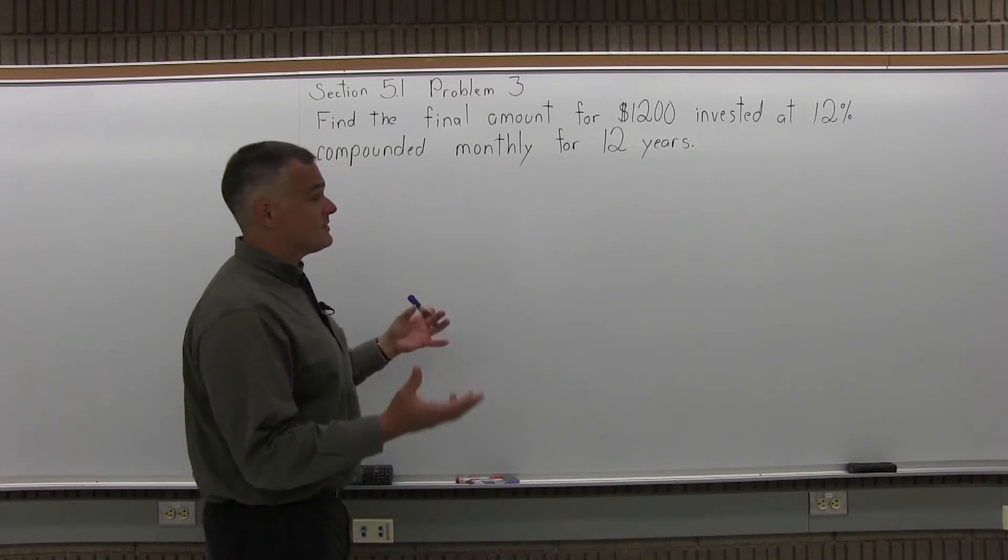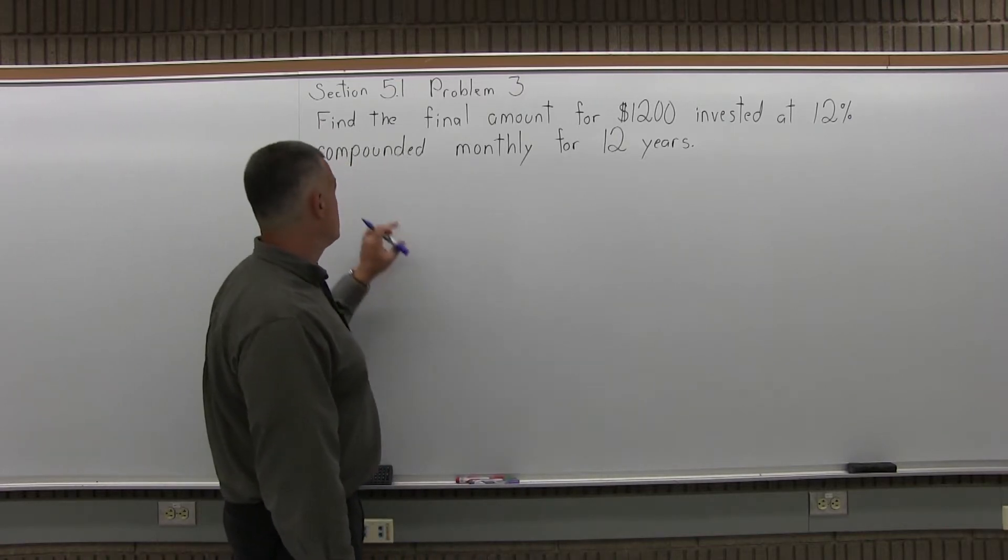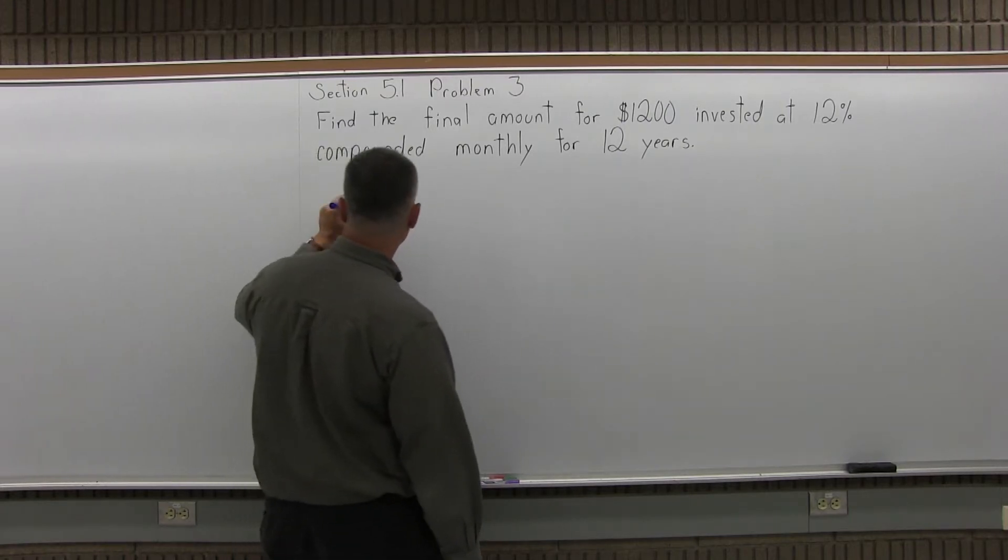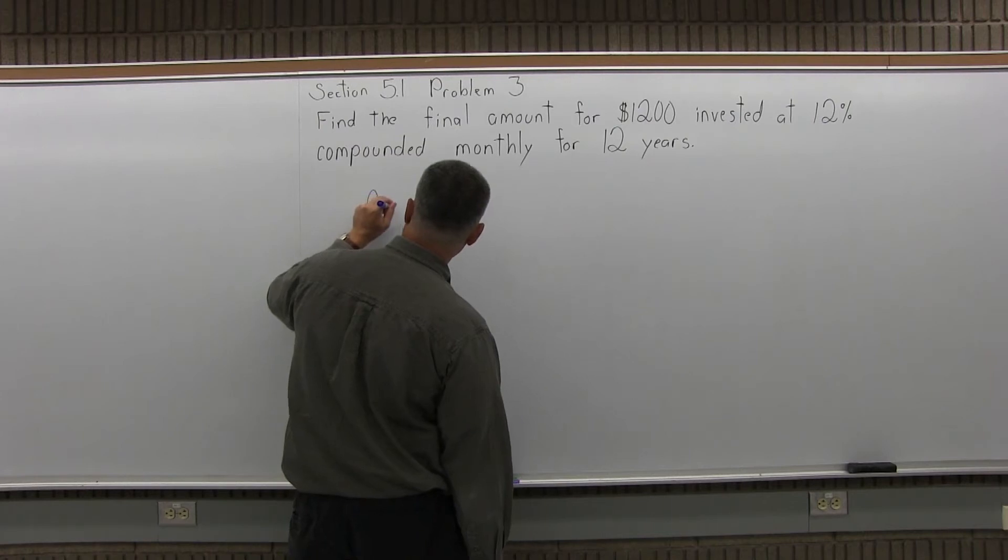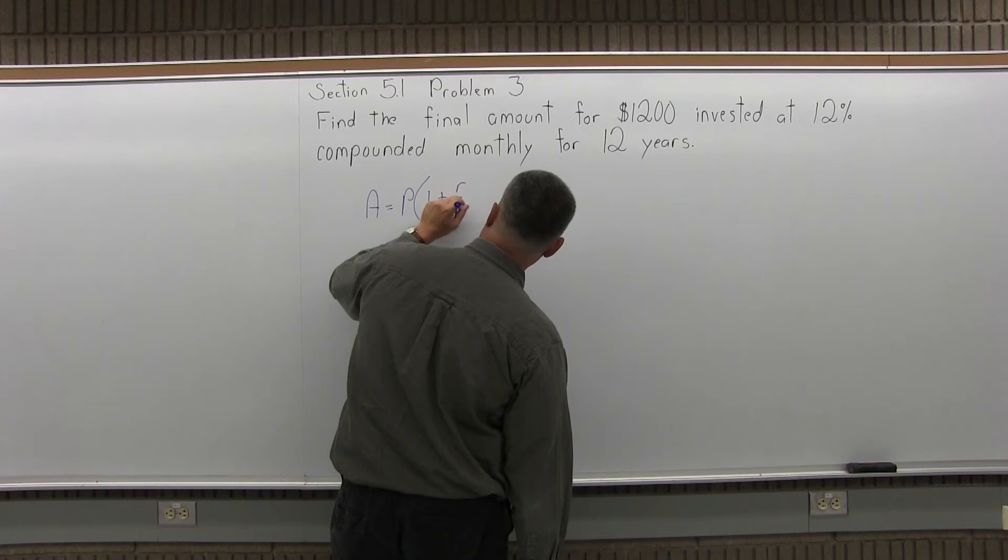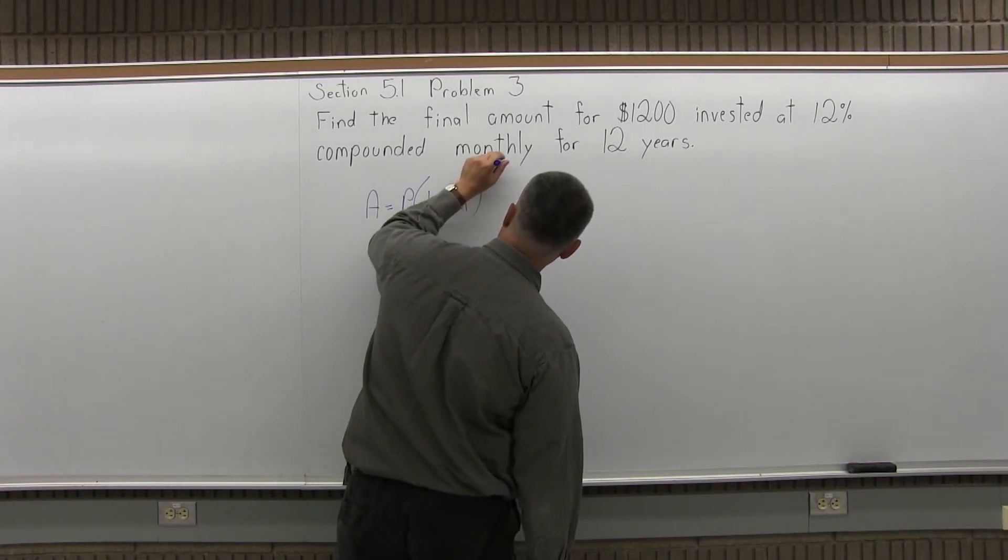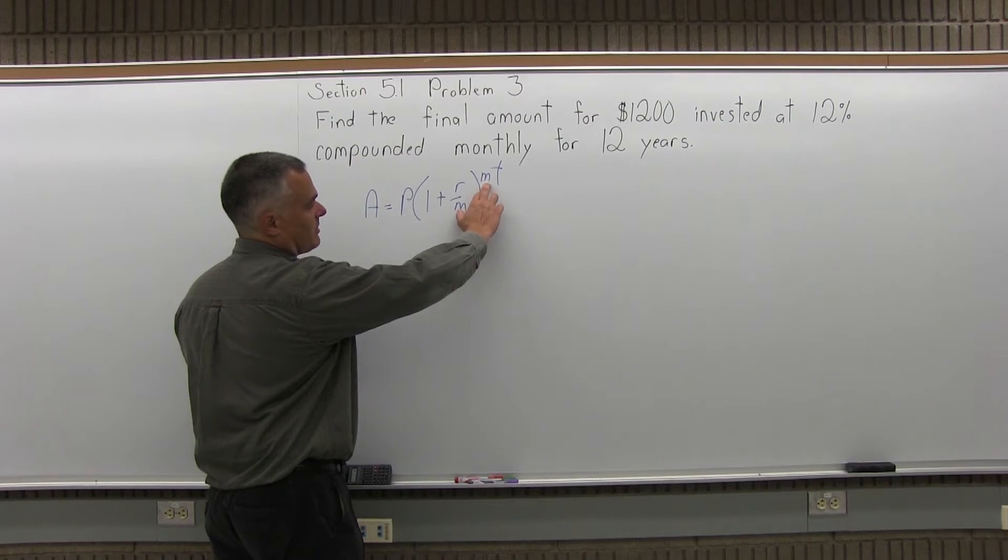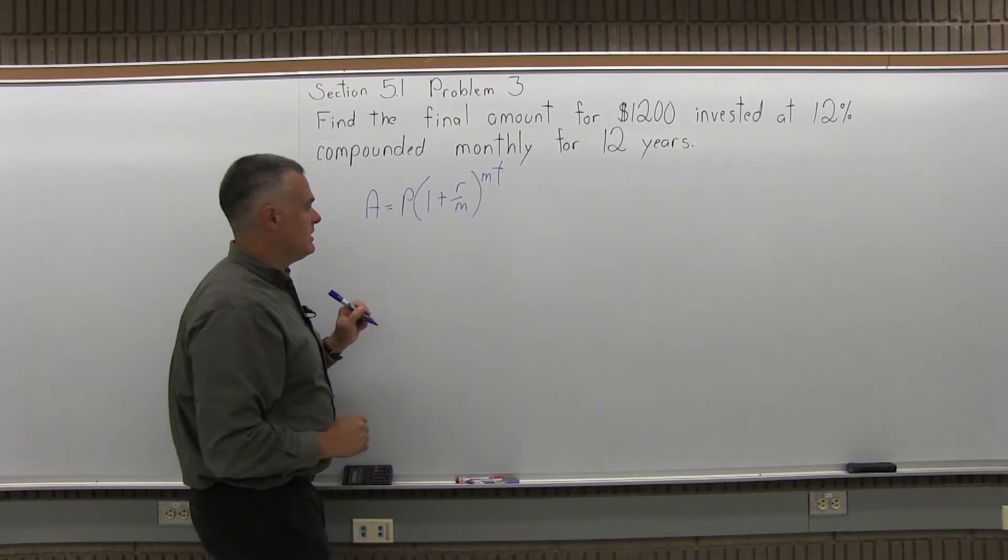So what's the difference, compound interest and simple interest? Now this one says compounded monthly so that's telling me I have to use the compound interest formula which is A equals P times 1 plus R over M to the M times T power where M is the type of compound, the number of times compounded per year.